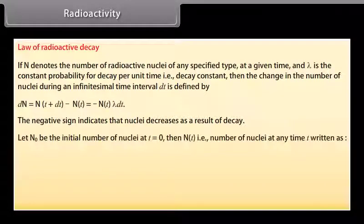Let N0 be the initial number of nuclei at t is equal to 0. Then N(t), that is number of nuclei at any time t, is written as N(t) is equal to N0 times e to the power minus lambda t.